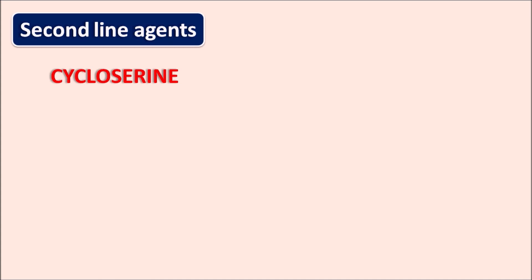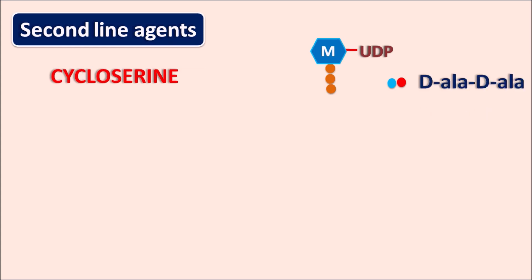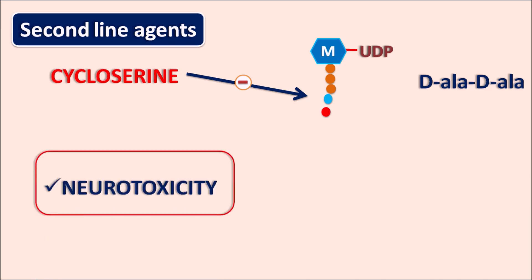Next is cycloserine, a drug that inhibits cell wall synthesis within the bacteria. During cell wall synthesis, the important building block is N-acetylmuramic acid, which carries a tripeptide chain. This tripeptide chain is converted into a pentapeptide chain by addition of a dipeptide made up of alanine — the D-alanine D-alanine dipeptide. Cycloserine inhibits the addition of this dipeptide to the tripeptide chain on N-acetylmuramic acid, thereby inhibiting cell wall synthesis.